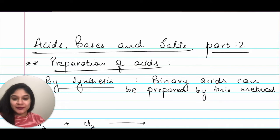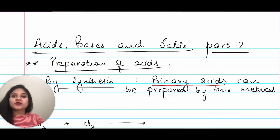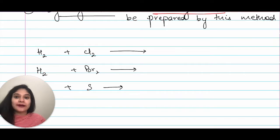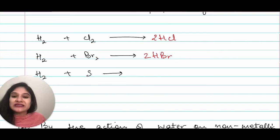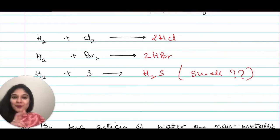We are going to start with the preparation of acids. The first method is by synthesis. This method is used to prepare binary acids — acids made up of two elements. Examples: hydrogen plus chlorine gives HCl; hydrogen plus bromine gives HBr; H₂ plus S gives H₂S. H₂S is hydrogen sulfide — leave a comment and tell me the smell of this gas.